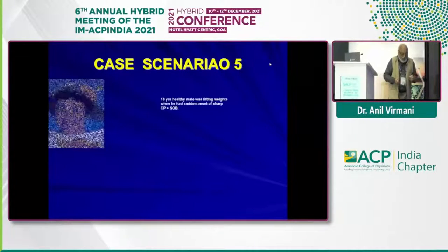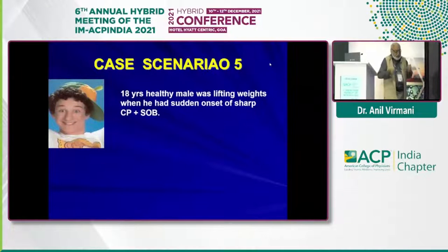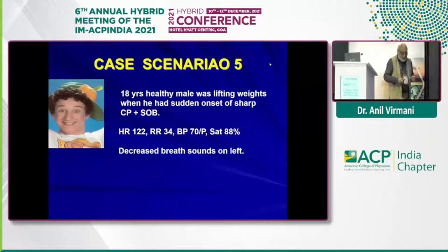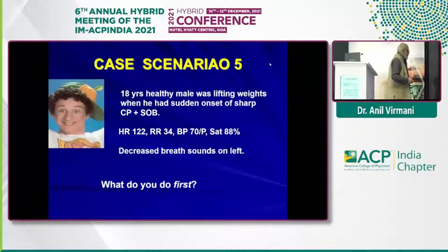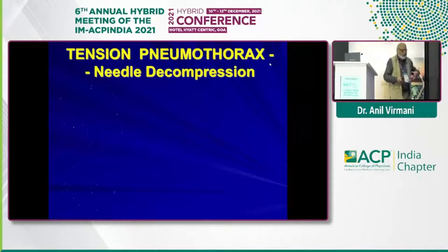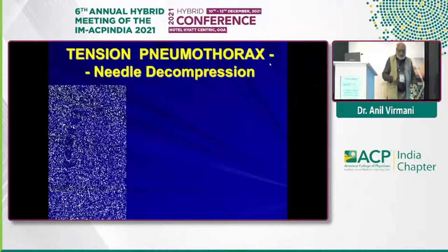Case scenario five: a young 18-year-old healthy male was lifting weights when he suddenly had onset of chest pain and breathlessness. He has tachycardia, tachypnea, low blood pressure, low oxygen saturation, and decreased breath sounds on the left. Diagnosis: this is nothing but tension pneumothorax. Just put in a needle at the second intercostal space and you cure the patient.